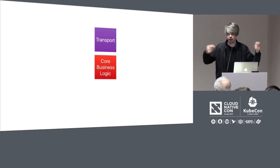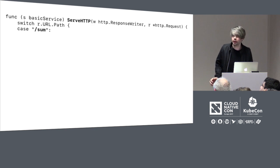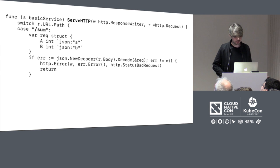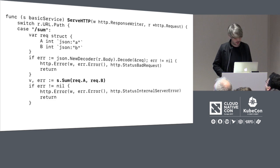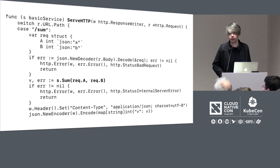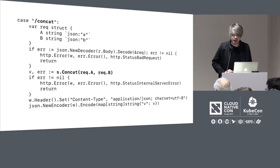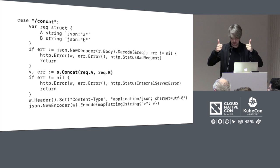This is our core business logic — our red square — but there's a lot of stuff we have to start layering on top. The first one is a transport; this is useless sitting in memory, we need to be able to talk to it. Typically we're going to do a JSON HTTP thing. One way to do it is to attach a serveHTTP method onto the struct so it becomes an HTTP handler. We switch on the path, and for the sum endpoint, construct a request object, deserialize from the body, invoke the sum method on the type calling our business logic, then serialize JSON back to the client. The concat thing is the same — different types, but exactly the same code.